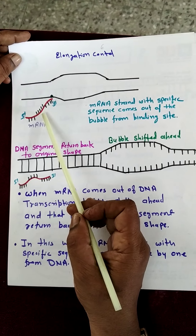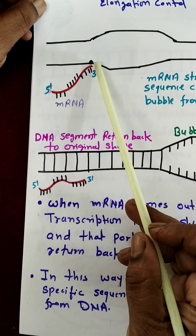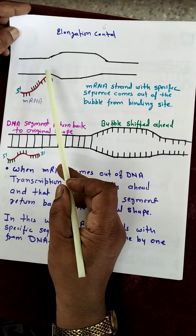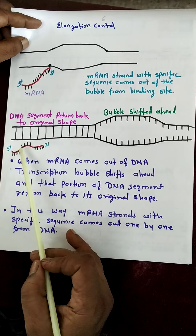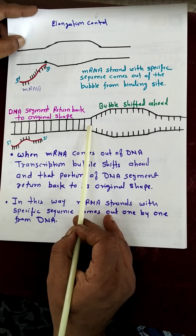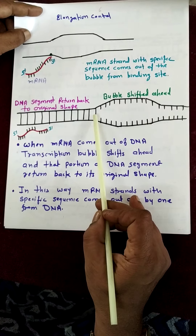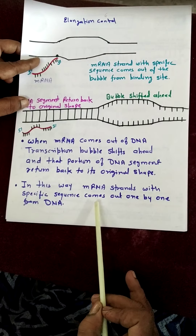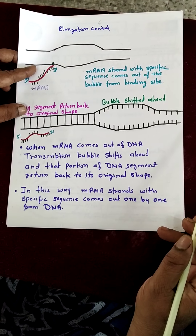When the mRNA is produced, it comes out of the DNA segment from that binding site where the RNA polymerase was bound. The newly formed mRNA comes out of the DNA strand. After coming out, that elongated transcription bubble returns to its original shape. The bubble then shifts ahead. In this way, mRNA strands with specific sequences come out one by one from the DNA, and the bubble shifts ahead and ahead towards the 5' end.